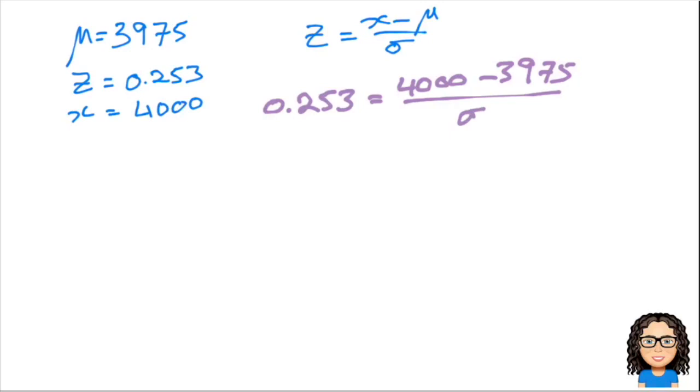So what we can do is we've actually got three of the values we can substitute into this equation. So instead of z, I'm going to put 0.253. The x, I've got the value of 4,000. The mean is 3,975, and that's dividing by the standard deviation that I don't know. So now I need to rearrange this equation. The first thing I'm going to think is I've got to divide it by the standard deviation. The opposite of dividing is times, so let me take that to the other side. So 0.253 times my standard deviation equals 4,000 minus 3,975. Let me just simplify that. 4,000 minus 3,975, that's going to give us a value of 25.